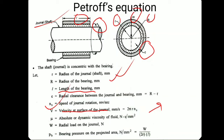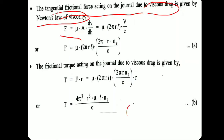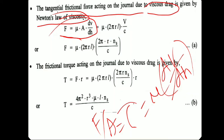Now I will develop the two types of torque for deriving the Petroff equation. First, the tangential frictional force acting on the journal due to viscous drag — because of the motion of the shaft, viscous drag acts on the structure. We calculate it using Newton's law of viscosity: τ = μ·(dv/dh), and since τ = F/A, we get F = μ·A·(dv/dh).